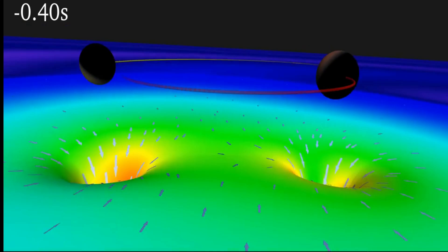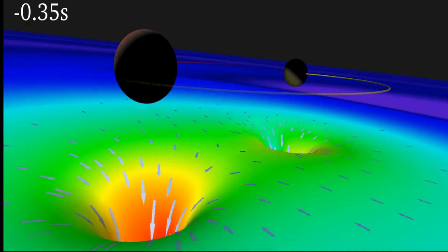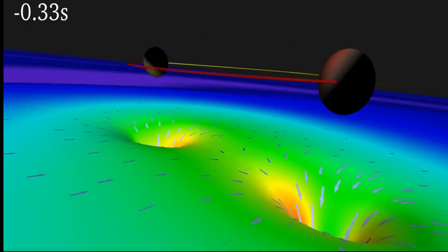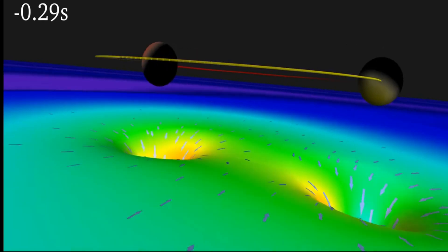In the green regions outside the holes, time flows at its normal rate. In the yellow regions, it is slowed by 20 or 30 percent. In the red regions, time is hugely slowed.